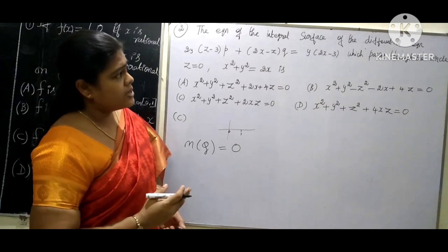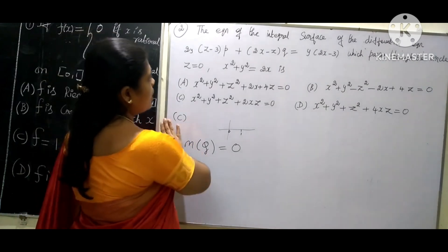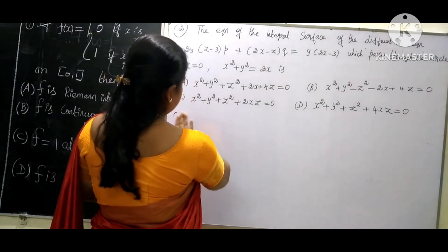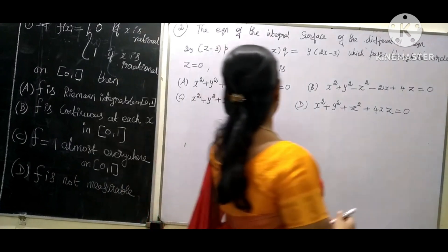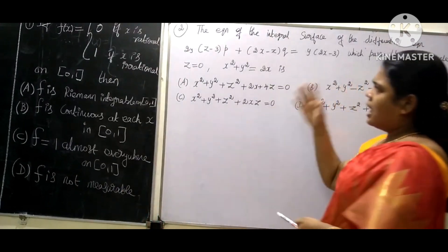The equation of the integral surface of the differential equation 2y·z - 3p + 2x - z³ is equal to y(2x - 3) which passes through the circle z = 0, x² + y² = 2x.